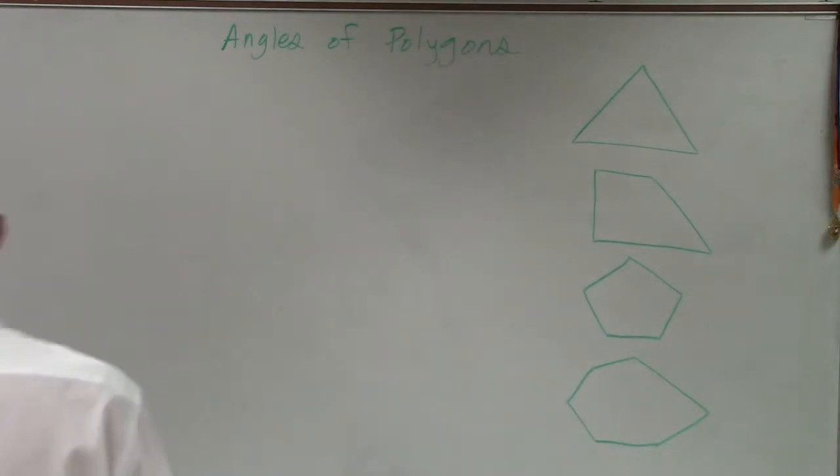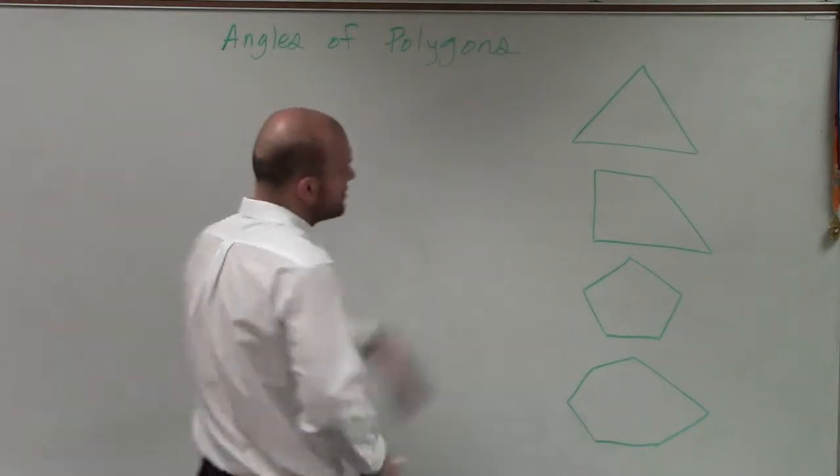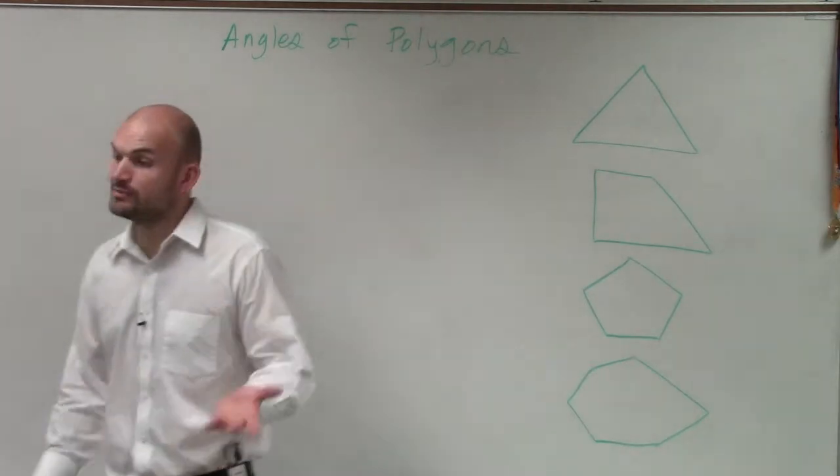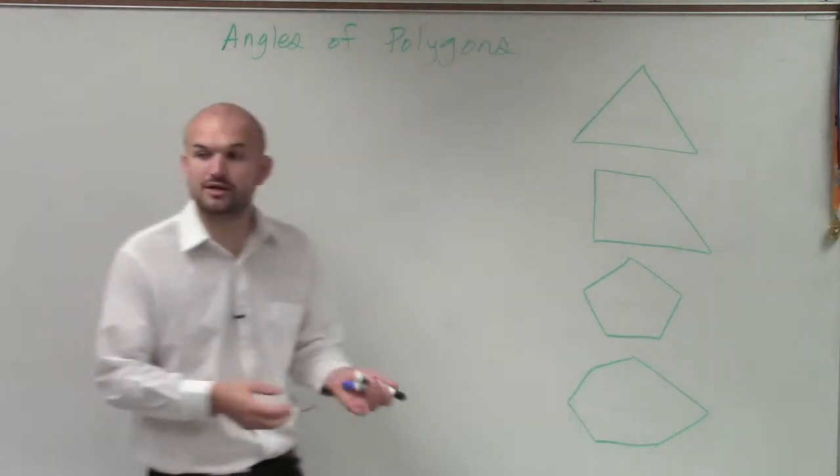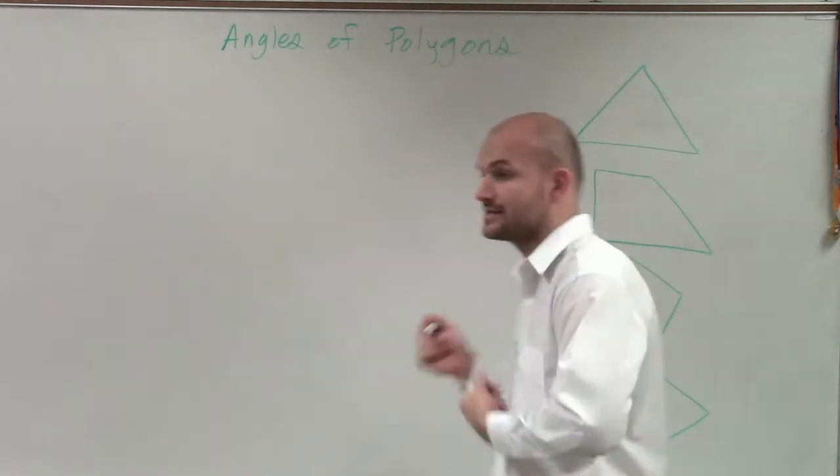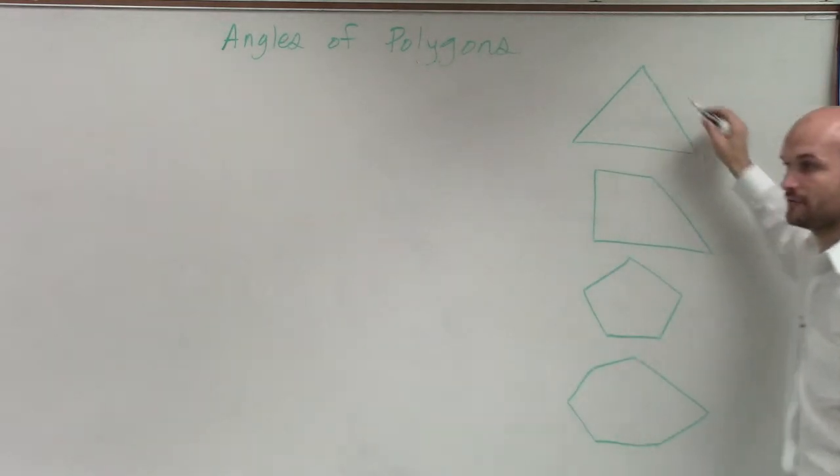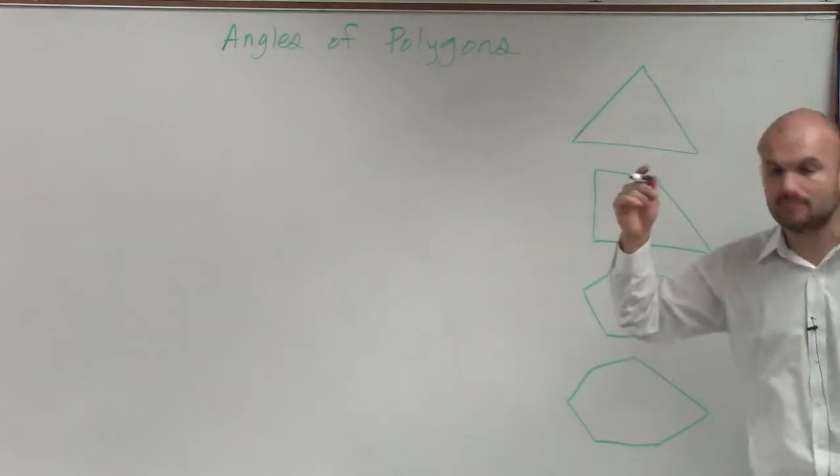So what we have here in this case is, ladies and gentlemen, we have four polygons. And what I'm trying to describe to you in these polygons is we're going to take a look at the side length. Here, we have three sides. And we'll call it a three-sided polygon.